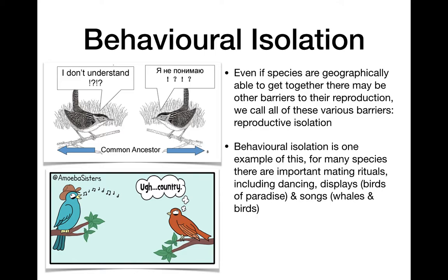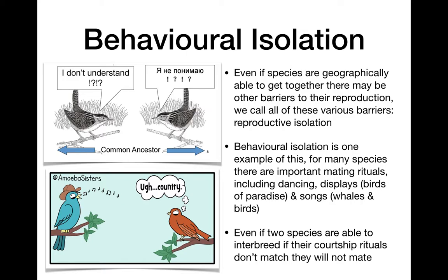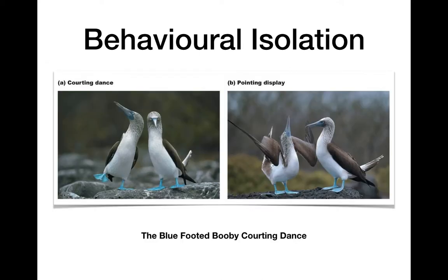Behavioral isolation means that the mating or courtship rituals of individuals in a species do not match. For birds, bird song is really important for attracting a mate, as is display — like birds of paradise dancing and fluffing their feathers. In whales, humpback whales sing to attract a mate. If the behavior doesn't match, they will not mate. Even if two species could interbreed, if their courtship rituals don't match, that's behavioral isolation. The blue-footed booby does a courtship dance — stepping foot to foot, then pointing its beak and tail up with wings raised — and only the right dance will earn a mate.